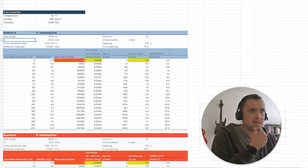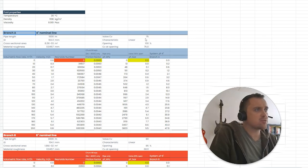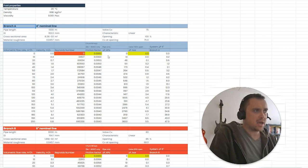So what I've got here is the first branch, branch A, has a four inch line of a thousand meters, and in it is installed a valve with a CV of 75, 100 percent open. And what I've got is the system curve. I've got volumetric flow rate and I've got the total system pressure drop in this column over here.